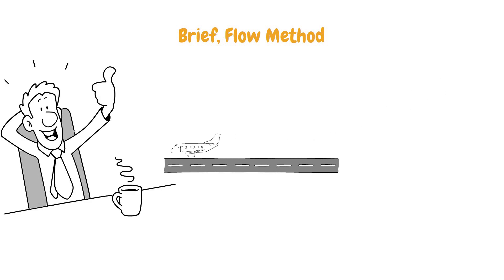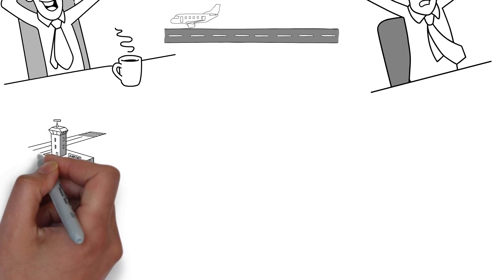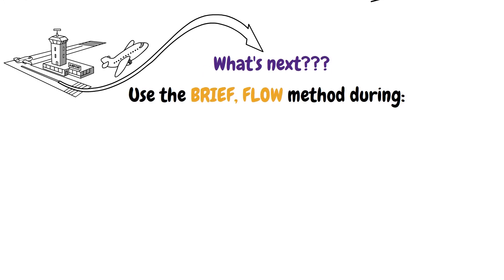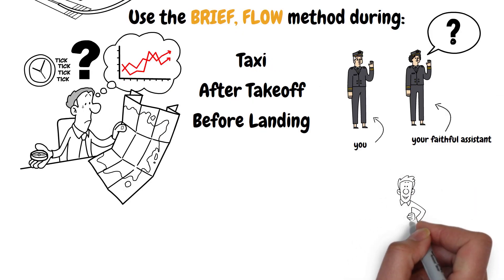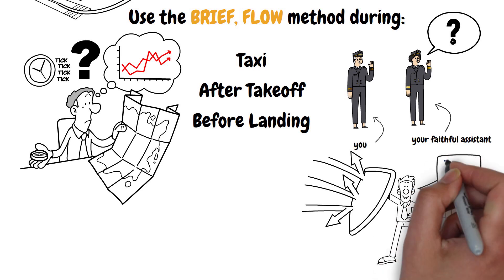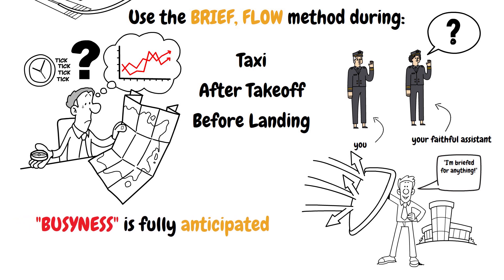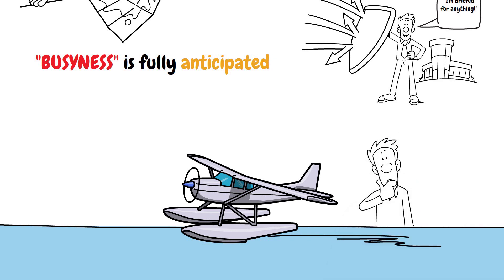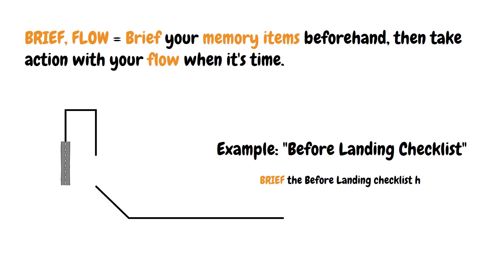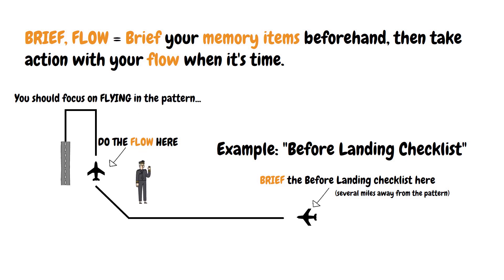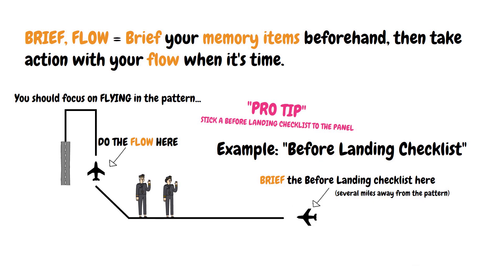When is it proper to use the brief-flow method? You're probably about to take off or are approaching the airport to land. You might be relaxed now, but in just a few moments you'll be busy flying the airplane and getting it configured for the next phase of flight. Pilots need to use the brief-flow method during taxi, after takeoff, and before landing phases. These are times when you won't have time to read the checklist afterwards unless you have a co-pilot. It is appropriate to brief yourself before the phase takes place, leaving you fully prepared for that busy phase approaching quickly. A great example is when you're approaching the airport before landing — the before landing checklist should be briefed several miles from the traffic pattern, then the flow completed on the downwind leg. One pro tip is to keep a small before landing checklist on your panel in plain sight, making it easy to glance at in the pattern if needed.